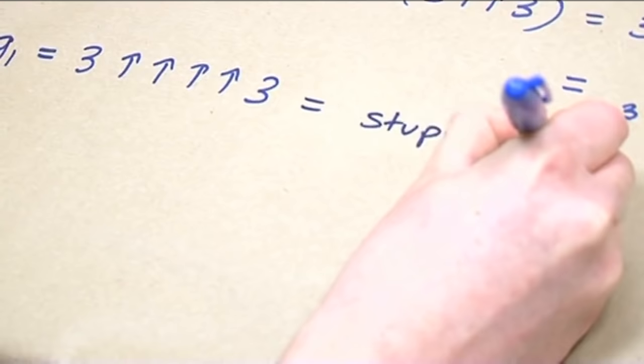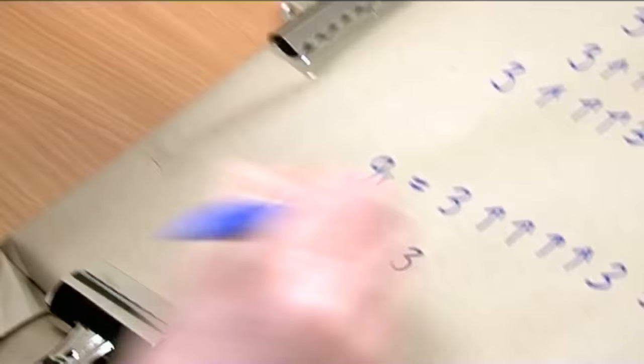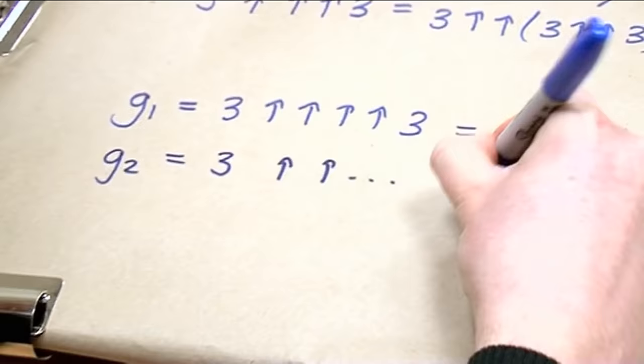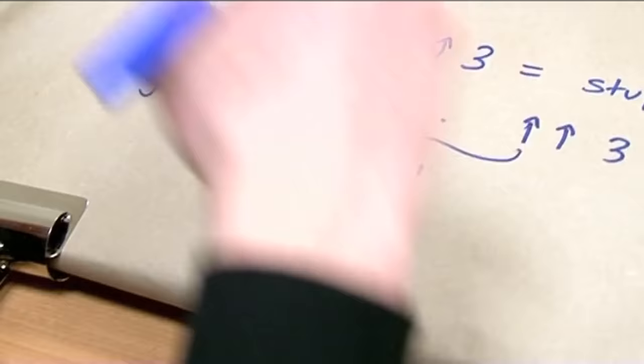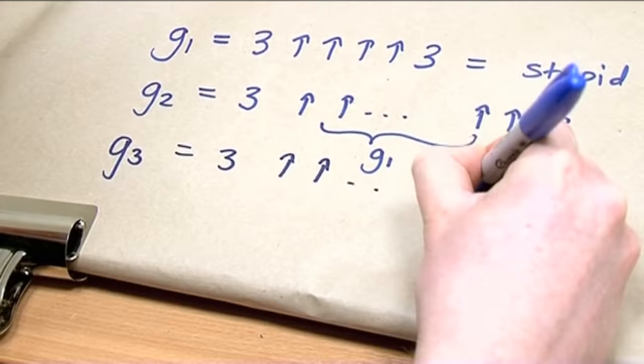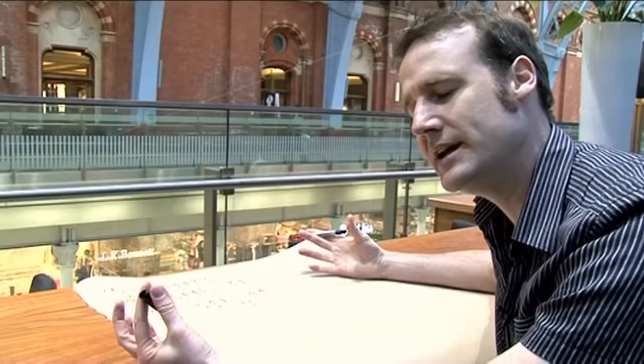Right? Now we say, well, it's G2. Well, G2 is a three where we've got a lot of arrows. How many arrows have we got? We've got G1 of them. So this was stupidly big. This is stupidly, stupidly big, right? And then we carry on. We do G3. And we get a whole bunch of arrows. How many? Well, you guessed it. G2 of them.